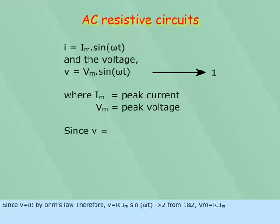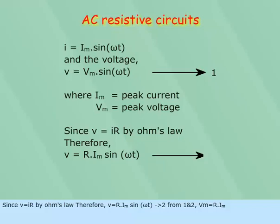Since V equals IR by Ohm's law, therefore V equals R multiplied by I_m multiplied by sin omega t equation 2.